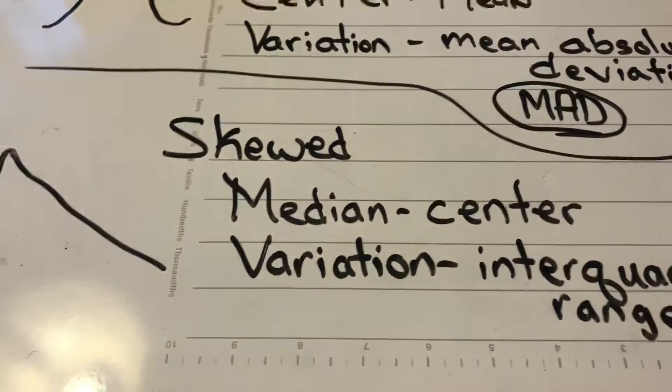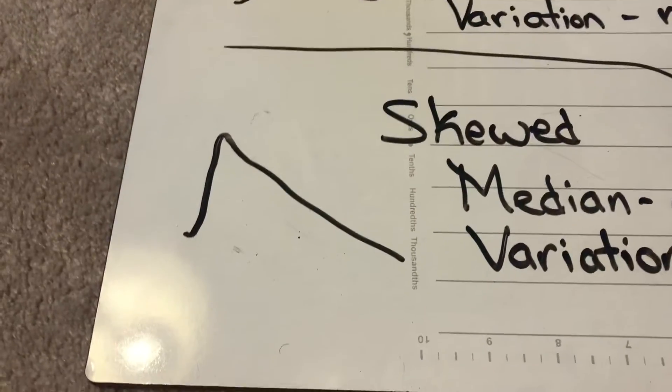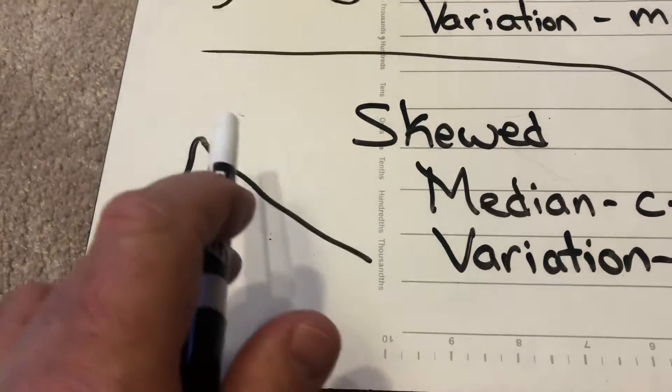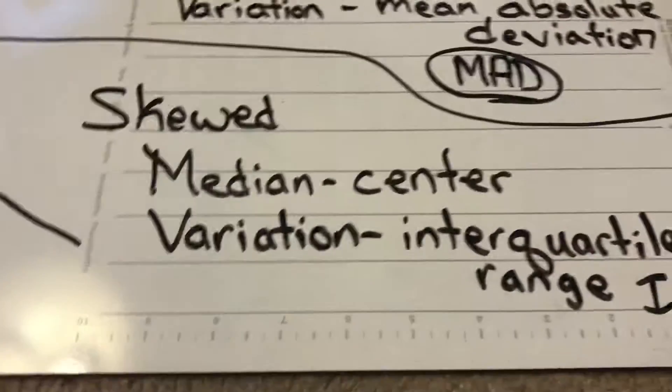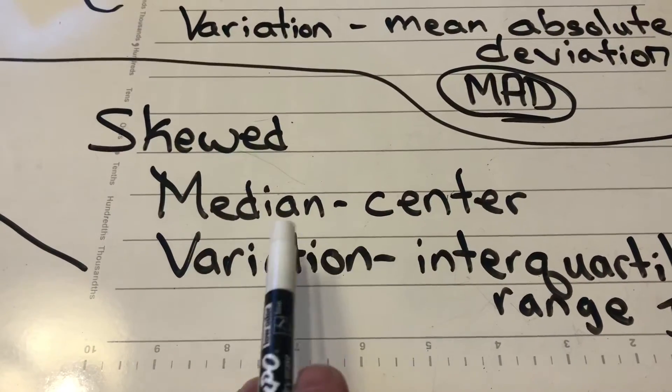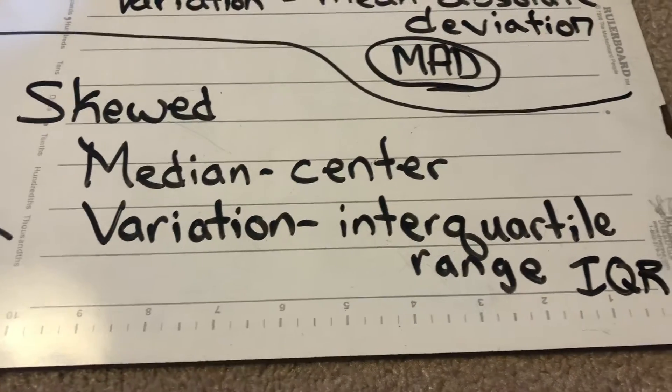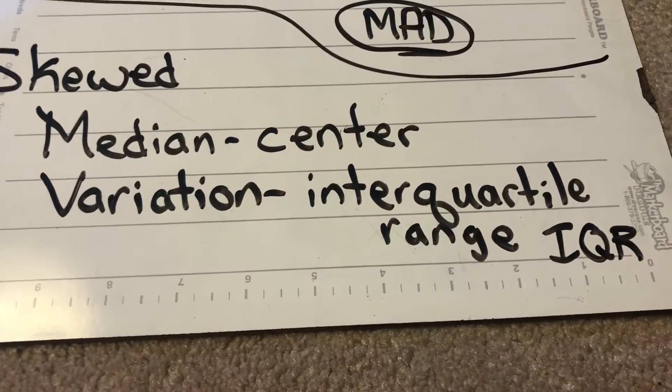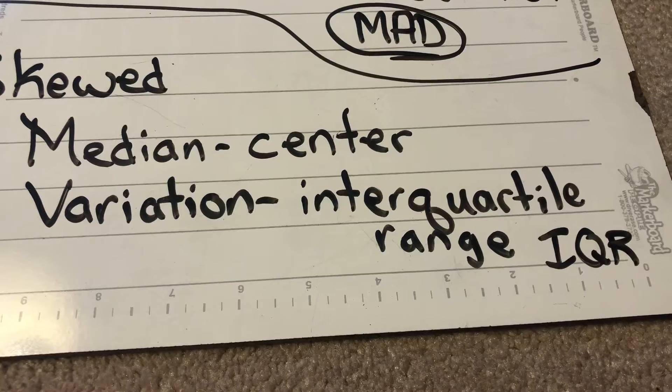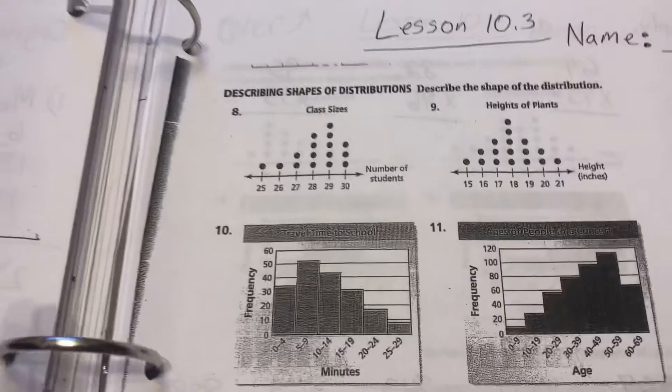If it's a skewed shape, more like this, where it plateaus and then kind of just decreases, we're going to use the median to describe the center, and we're going to use the interquartile range, or the IQR, to describe the range. So, not going to be a long video, but let's look at a few of these examples here.